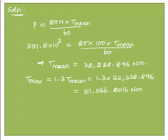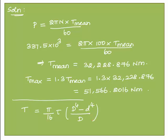We know the formula relating torque, shear stress, and the internal and outer diameters of a hollow shaft: Torque = (π/16) × τ × (D⁴ − d⁴) / D. This is the formula for torque transmitted for a hollow shaft.